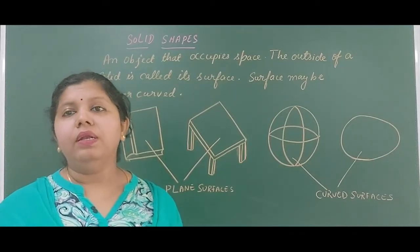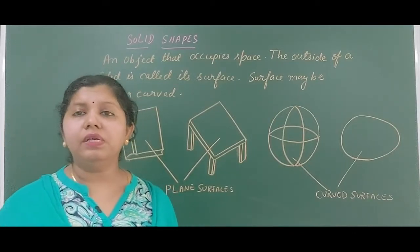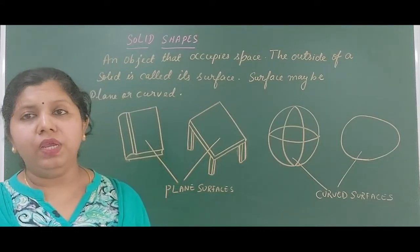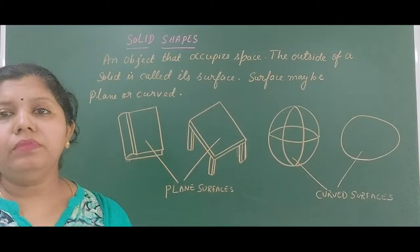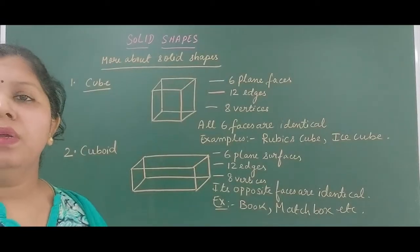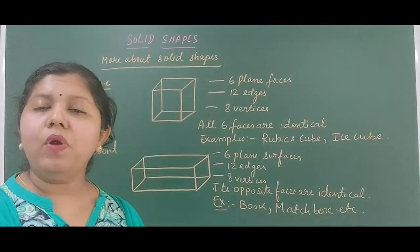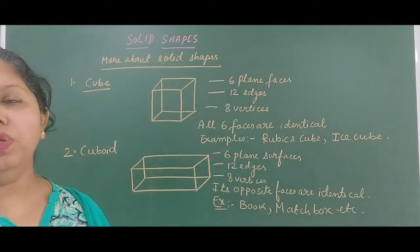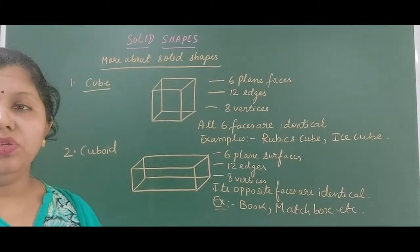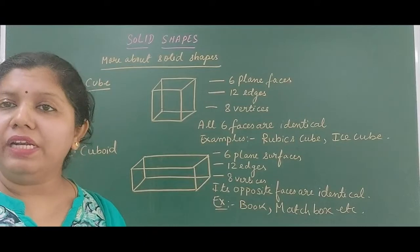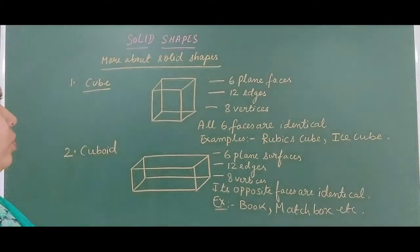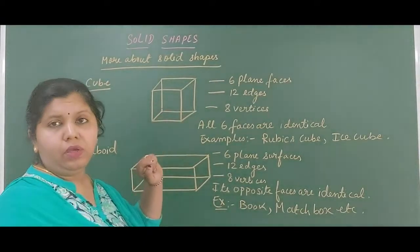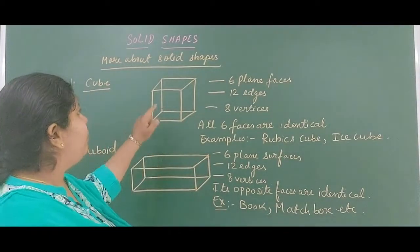Moving further, we will discuss each and every solid shape. The first important solid shapes we will look at are cube and cuboid. Let us learn about the various characteristics of a cube. A cube has 6 plain faces and 12 edges.